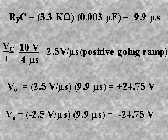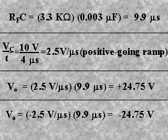The time constant is equal to the feedback resistance times the capacitance, or 9.9 microseconds. The output voltage rate of change is first calculated by dividing the voltage across the capacitance by the time, which equals 10 volts divided by 4 microseconds, or 2.5 volts per microsecond — a positive-going ramp. The output voltage is then equal to the rate of change times the time constant, or 2.5 volts per microsecond times 9.9 microseconds, which equals 24.75 volts.